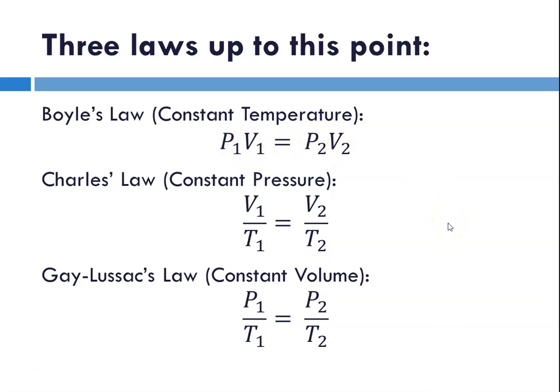Then we talked about Charles's law, which is at constant pressure, and we said that volume and temperature have a direct relationship. When one goes up the other goes up. So mathematically V1 over T1 equals V2 over T2, which is equal to some constant.